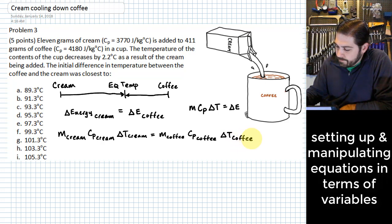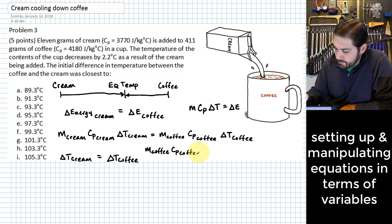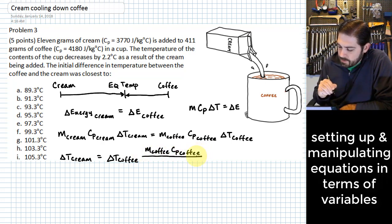So why don't we rearrange this? What we want to know is how much does the cream change in temperature. So the change in temperature of the cream can be expressed as the change in the temperature of the coffee multiplied by the mass of the coffee times the specific heat of the coffee, divided by the mass of the cream times the specific heat of the cream.